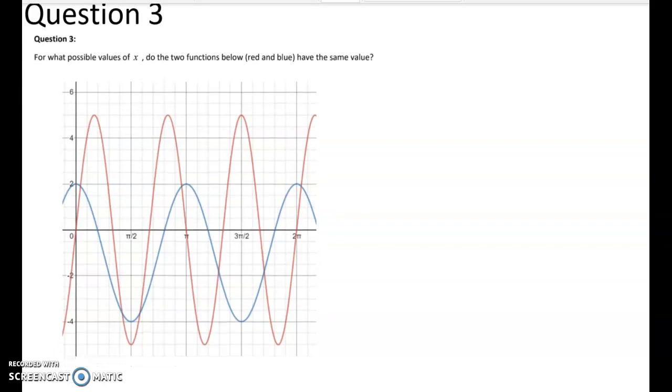So in this one we're given two functions, the red one and the blue one, and we're asked for what possible values of x do the functions have the same value. So what we need to do is figure out the equations for each function, equate the two functions, and solve that equation.